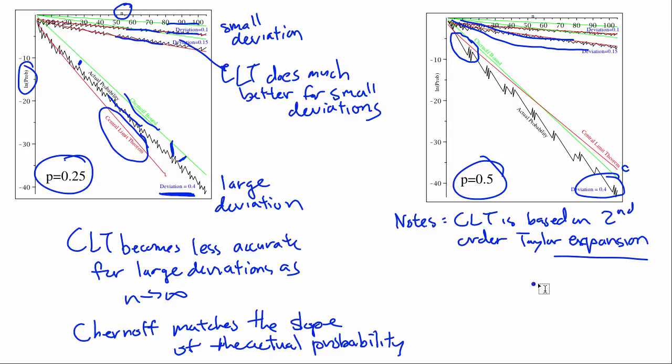And so, again, important takeaway, Chernoff is not effective for small deviations. It's like using water moves against the grass type Pokemon. While CLT has the same problem when you're dealing with large deviations. And last but not least, a reminder that the Chernoff bound is an upper bound. And so you'll definitely see that it's above this actual probability, whereas the CLT can creep below this actual probability.